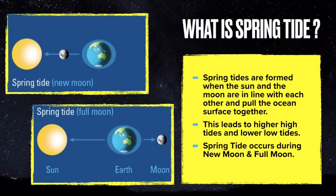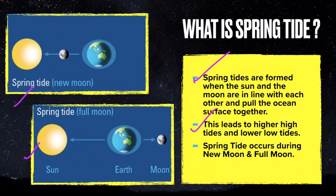Here are your diagrams which you can draw in your notebooks. Spring tides are formed when the sun and the moon are in line with each other and pull the ocean surface together. This leads to higher high tides and lower low tides. Spring tide occurs during new moon and full moon.